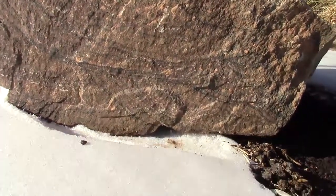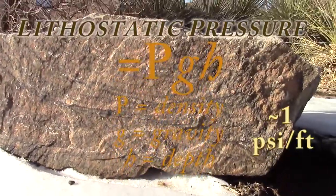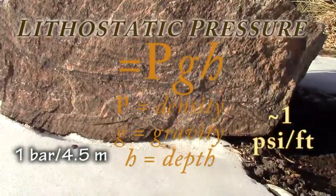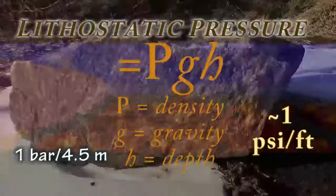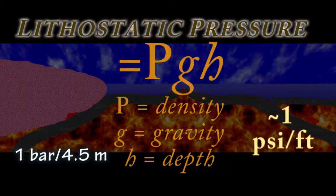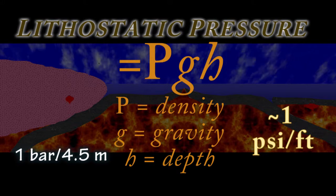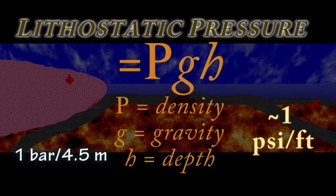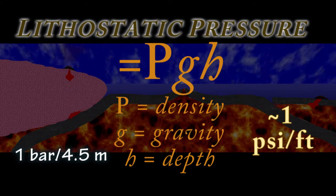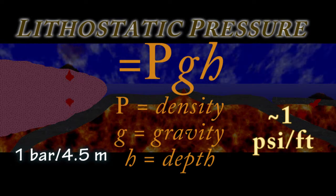Pressure increases at about one pound per square inch per foot, or almost one bar per 4.5 meters. The deeper into the Earth's crust we go, determined by the formula rho g h, where rho is the average density of overlying rock, g is the gravitational acceleration, and h is depth.